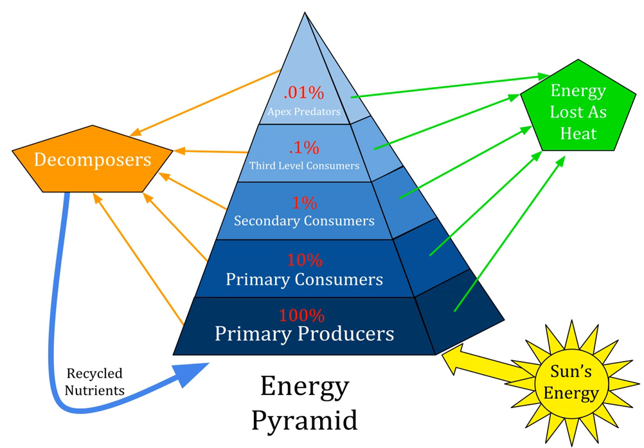The advantages of the pyramid of productivity as a representation: it takes account of the rate of production over a period of time. Two species of comparable biomass may have very different life spans, so a direct comparison of their total biomasses is misleading, but their productivity is directly comparable. The relative energy chain within an ecosystem can be compared using pyramids of energy, and different ecosystems can also be compared. There are no inverted pyramids, and the input of solar energy can be added.